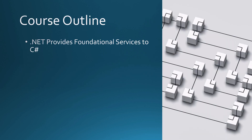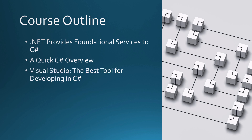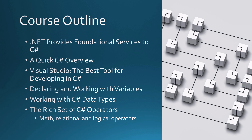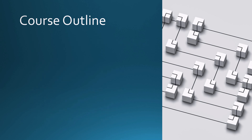Let's walk through what is going to be covered in this class. We're going to start out with .NET and how it provides foundational services to C-Sharp developers. I'll give you a quick C-Sharp overview and a quick overview of Visual Studio. We're then going to dive right into declaring and working with variables, working with C-Sharp data types. We'll talk about the rich set of C-Sharp operators available to you, including math, relational, and logical operators. We'll talk about C-Sharp decision structures such as if statements and switch statements.